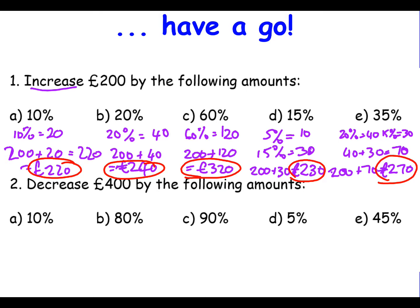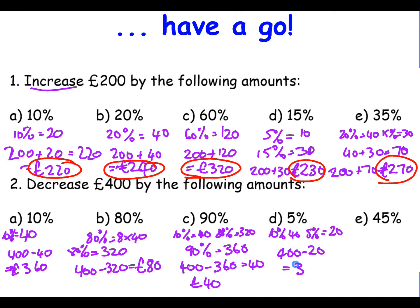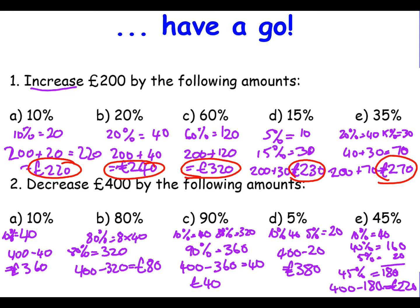Now let's do the calculations for percentage decreases of £400. Our 10% amount is £40. Decreasing £400 by £40 gives us £360. The answers for decreasing £400 by various percentages are: £360, £80, £40, £380, and £220.